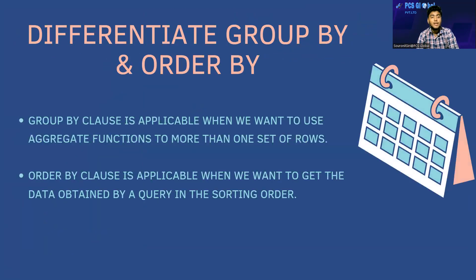The next question is: differentiate GROUP BY and ORDER BY clauses. GROUP BY is applicable when you want to use aggregate functions on more than one set of rows — for example, if you want to find the maximum salary, minimum salary, or average salary in an employee table, you use GROUP BY. ORDER BY is applicable when you want to get query results in sorted order — if you want to sort data in a column, you use ORDER BY.